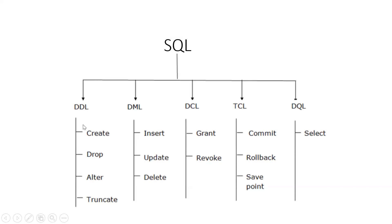In DDL statements: CREATE is how we create a table, DROP is how we delete a table from the database, ALTER is used when we want to update any kind of table structure — like adding a new column or updating a column's data type. TRUNCATE means we delete all the records from the table, but the table structure remains — the data becomes empty.